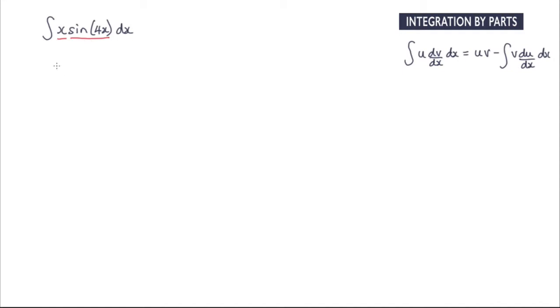The way to do it is to decide if I differentiate this does it become simpler, and yes it does. So we say let u equal x and when I differentiate that, du by dx equals 1.